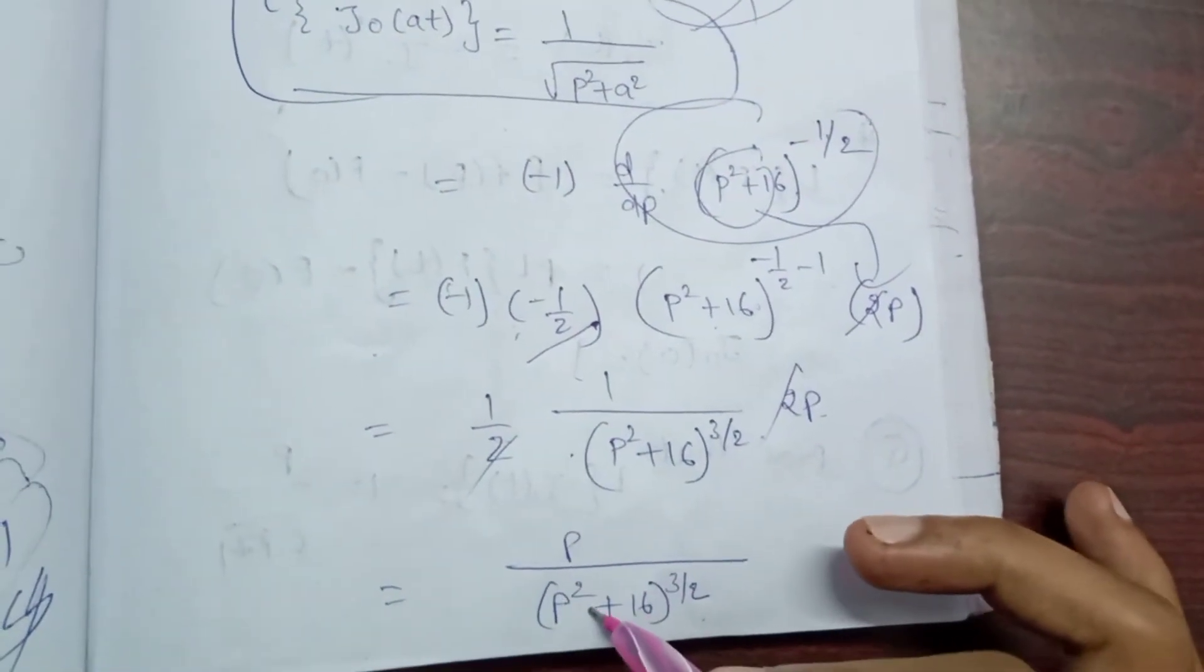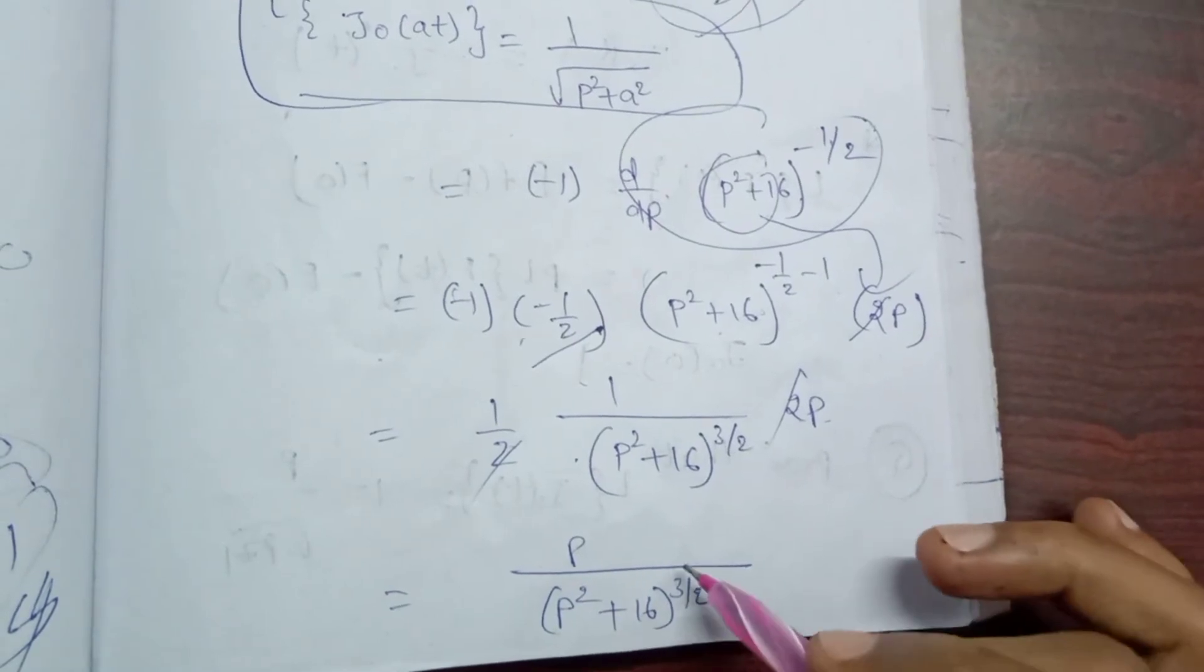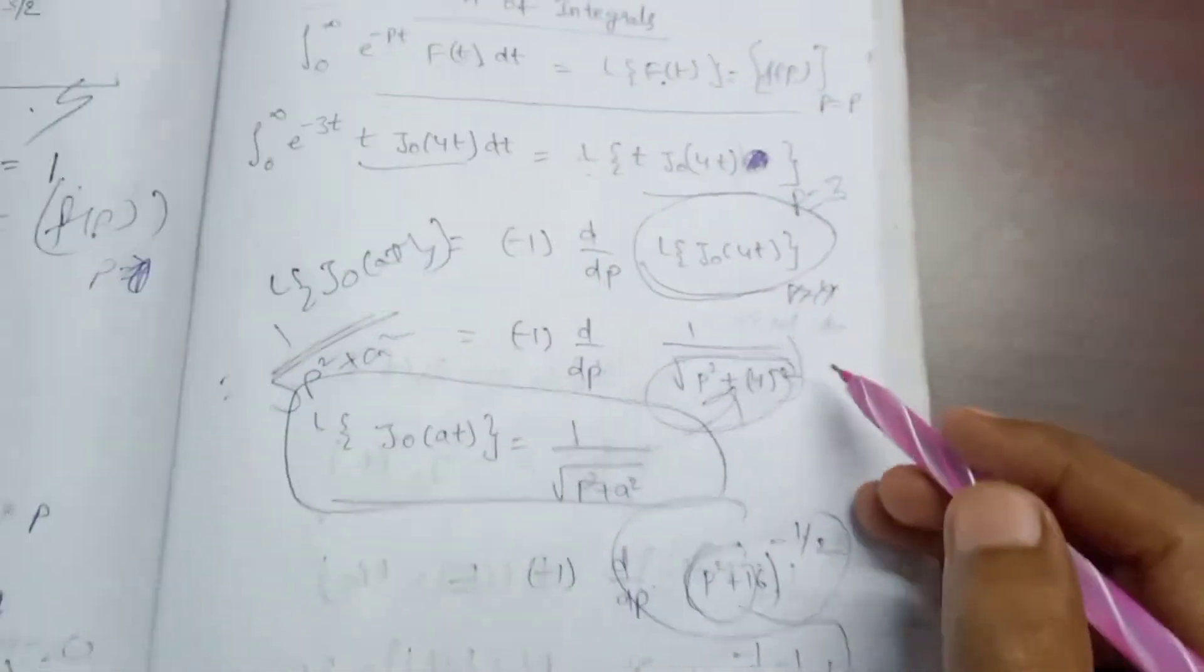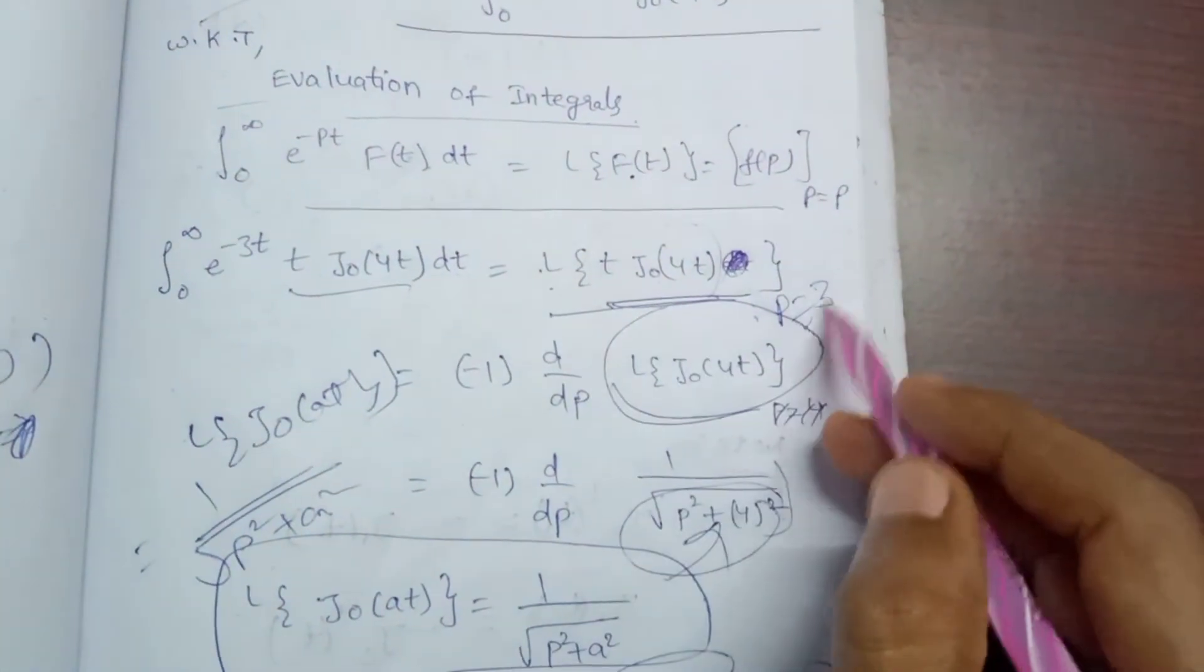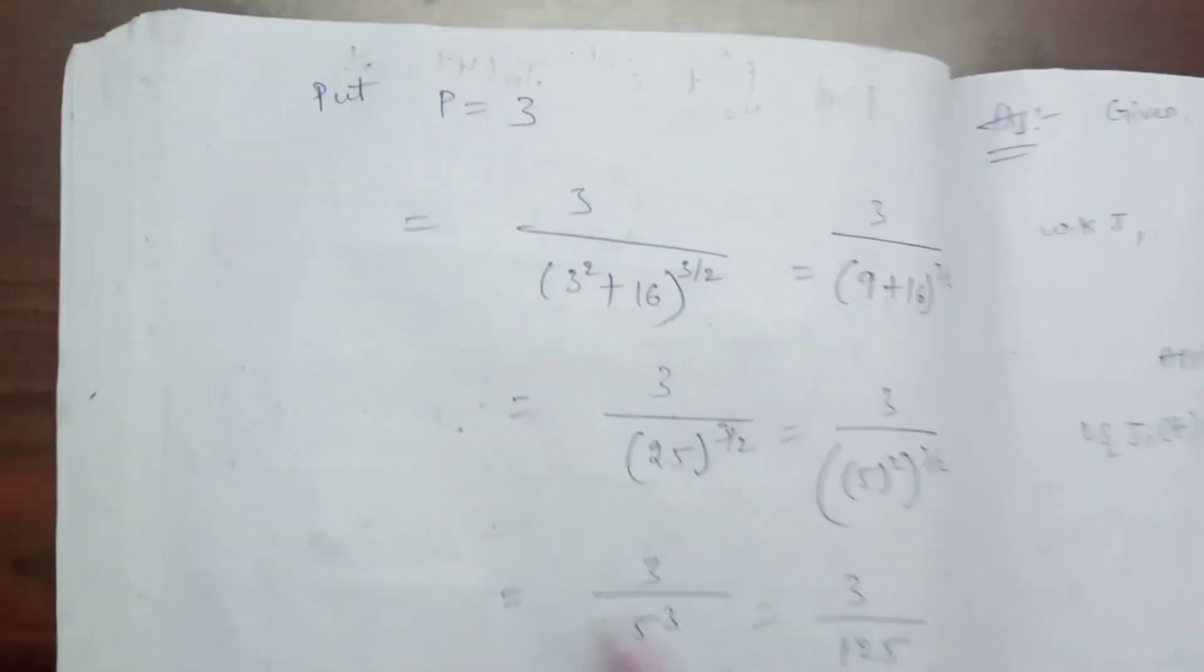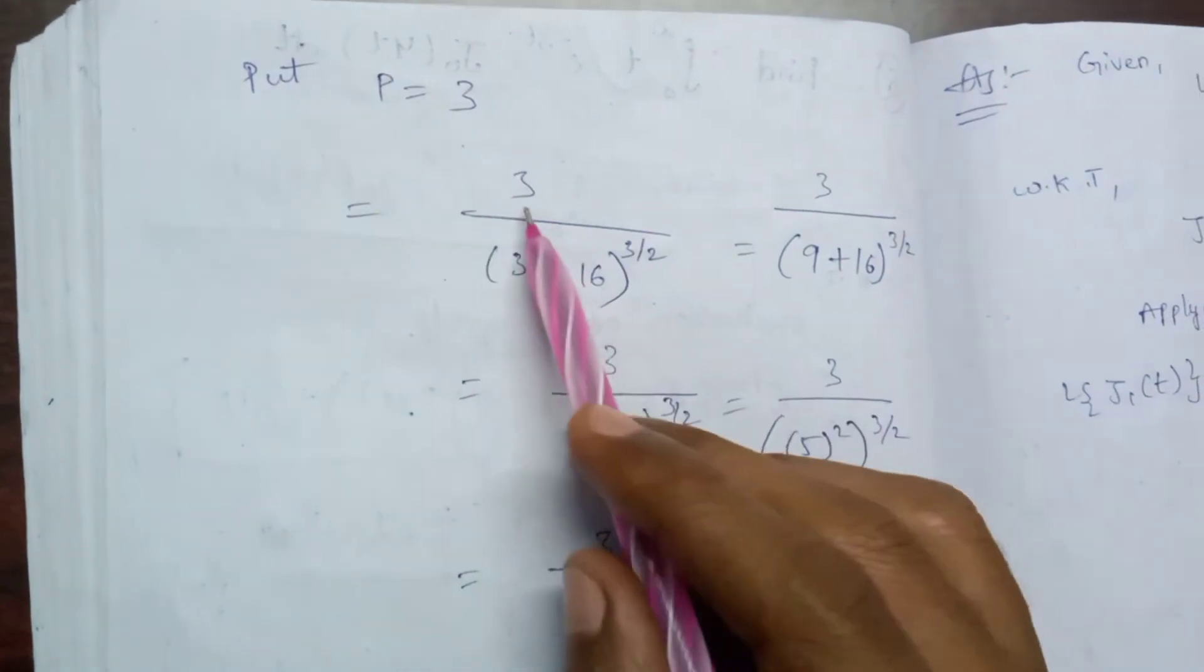P squared becomes P squared plus 16. P is equal to 3. Put P equals 3. Here we can subtract 3 by (3 squared plus 16) to the power of 3/2.